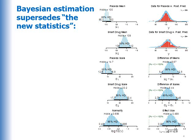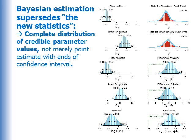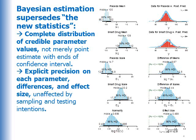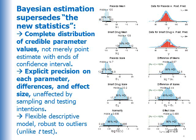Bayesian estimation supersedes the new statistics. It provides a complete distribution of credible parameter values, not merely a point estimate with ends of a confidence interval. Bayesian estimation provides explicit precision on each parameter, on the differences, and the effect size, unaffected by sampling and testing intentions. And we here have a flexible descriptive model which is robust to outliers, unlike the traditional conventional t-test.